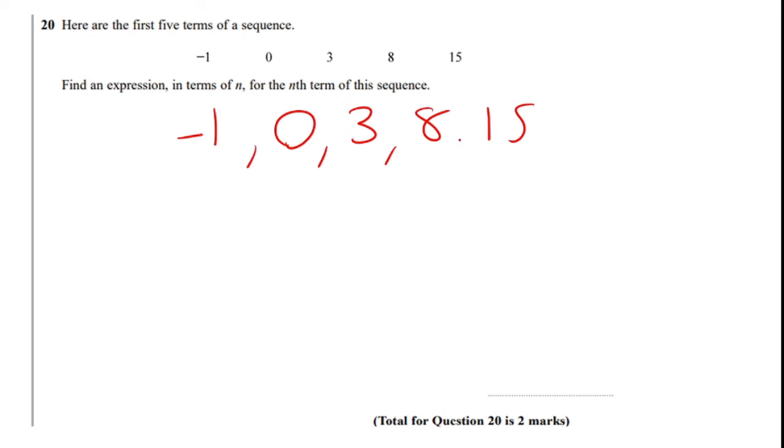So what we've got to do first of all, we have to work out our first level difference of these. So minus 1 to 0, I've got a difference of 1. 0 to 3, I've got a difference of 3. 3 to 8, I've got a difference of 5. And 8 to 15, I've got a difference of 7.